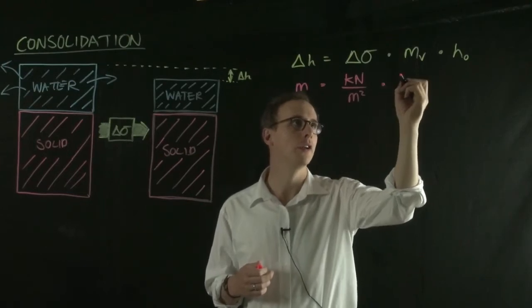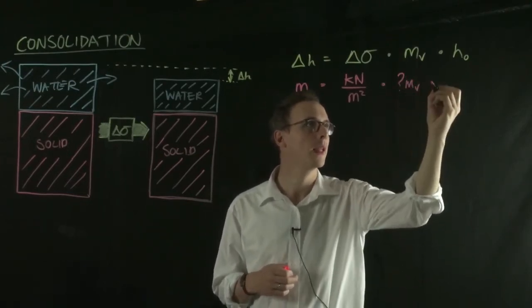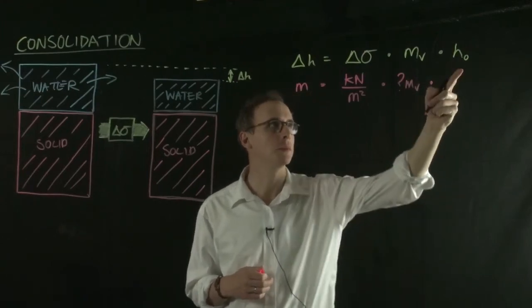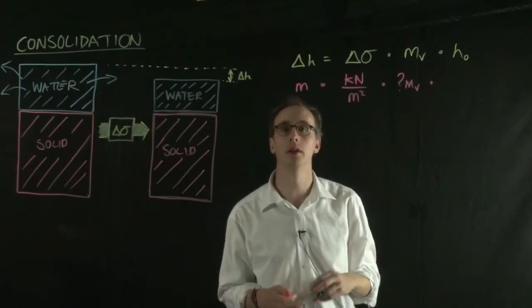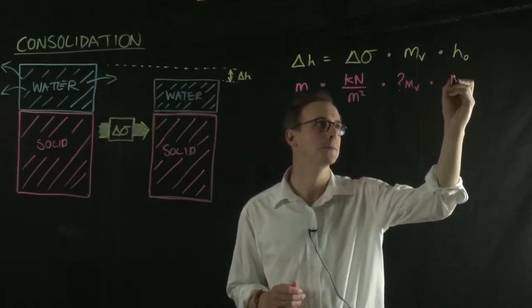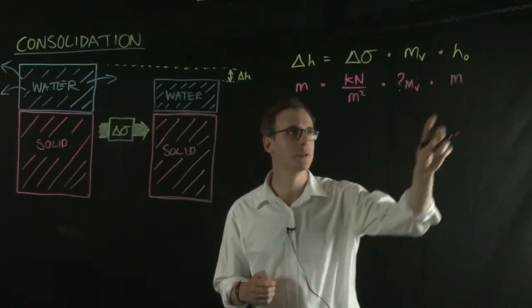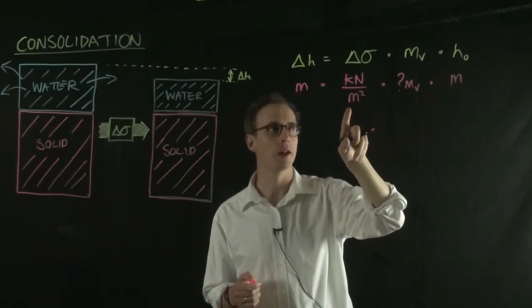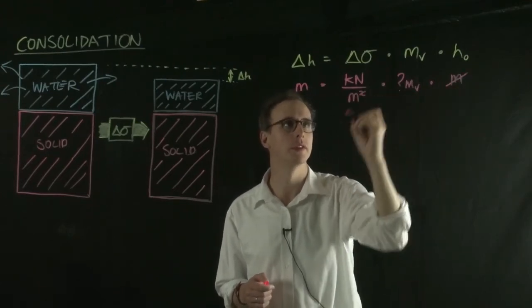You have an unknown here, your MV value, and then you're multiplying it by another unit of length, meter. Now you can see we've got one meter up here and two meters down here, so this meter cancels with one of these.